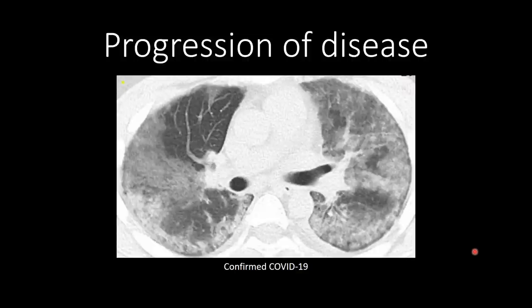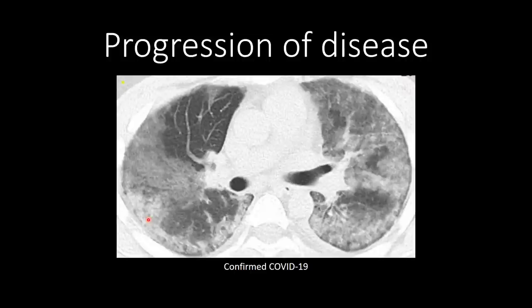In more progressed or severe cases of COVID-19, you may see diffuse ground glass opacification with areas of consolidation. In this case the process is still predominantly peripheral and ground glass predominant, with diffuse lung disease and areas of developing consolidation.